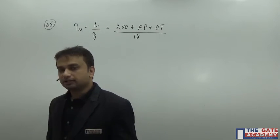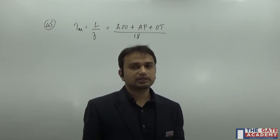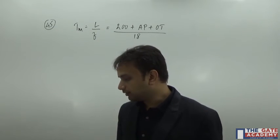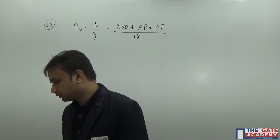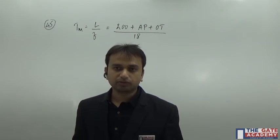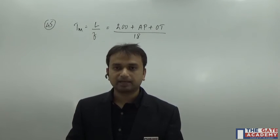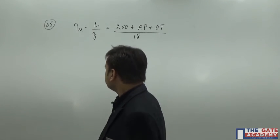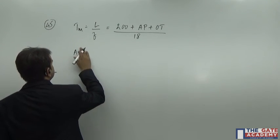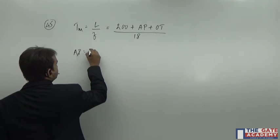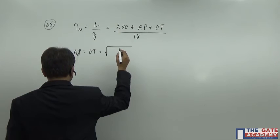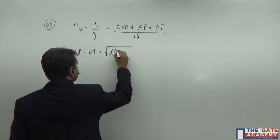And apart from that, in machining operation there is one more thing that is known as compulsory approach that we need to determine and we will be determining that through this equation I am going to tell. And since nothing else is given to you, we are going to consider this as the approach and the same as the over travel. So the approach, or let's say AP, is equal to OT and it is given by under root of d times capital D minus small d.